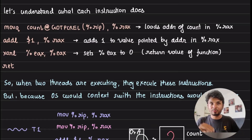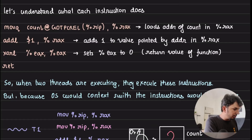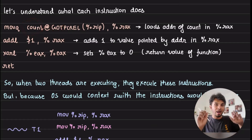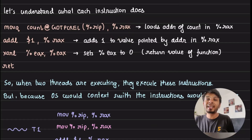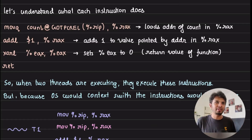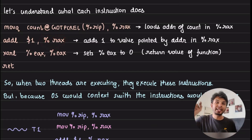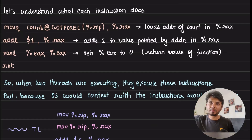Let's walk through the four commands. First: moveq count@GOTPCREL(%rip), %rax — this uses the global offset table (GOT) to read count and load its address into register rax. So in register rax we load the address of the variable count — not the value, just the address. Second: addl $1, (%rax) — whatever rax is pointing to, add one at that location. So add one to the value pointed by the address stored in rax.